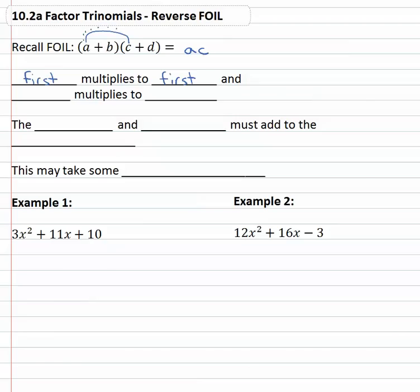Then we would do a times d. I'm going to use a dotted line, I'm going to come back to this. A times d and get ad, and then we would use b times c and get bc. I'm going to come back to that, and then we would finish by doing b times d at the end. In other words, the last term times the last term in the problem would multiply to the last term in the solution. So first multiplies to first, last multiplies to last.